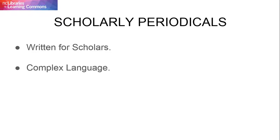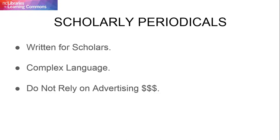Academic journals do not rely on advertising dollars in order to supplement their production costs. As a result, the contents of academic journal articles do not need to appeal to the general public. This helps to ensure that the research found within these articles is free from commercial and or popular biases.